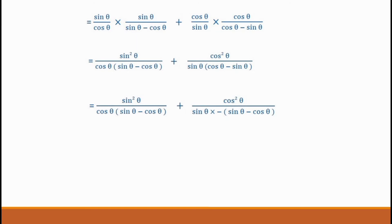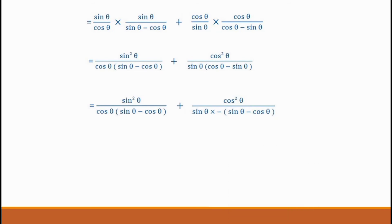We will add: minus cos squared θ by (cos θ · sin θ) into (sin θ minus cos θ), and minus (sin θ minus cos θ). This is the simplified form. Looking at the denominator in the numerator, there is a minus sign. So the fraction with the minus sign gives minus cos squared θ into sin θ, and the denominator (sin θ minus cos θ) also carries a minus.